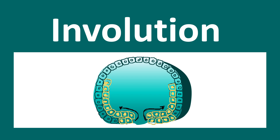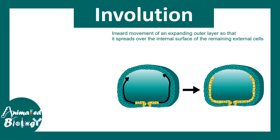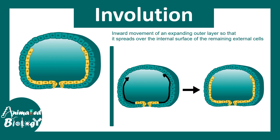The next movement is known as involution. Involution is the inward movement of an expanding outer layer so that the new layer now spreads internal to the external cell layer. If you follow the yellow cells in the animation, they are generated from the green cells on the outer side. As those outer green cells divide and increase in number, they slowly move inwards and spread just beneath the outer layer — this kind of movement is known as involution. You can see in the animation how these yellow cells are involuting inside the green outer layer.